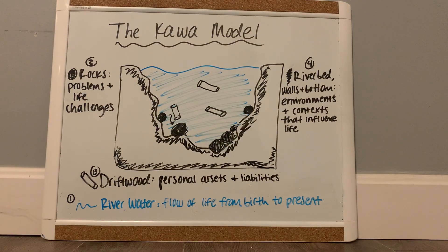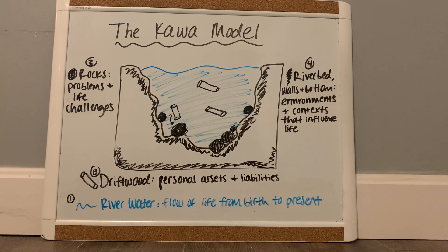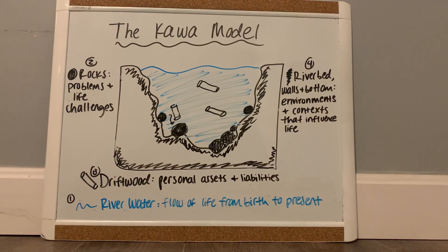Hi everyone, my name is Lauren Zaro. I'm an occupational therapy student at Worcester State University and today we'll be going over the Kawa model. The Kawa model is an occupational therapy approach that was developed in Japan. The purpose of this theory is to put emphasis on Japanese culture because the occupation-based models that were already developed in Western occupational therapy practice did not accommodate the Japanese beliefs and principles.